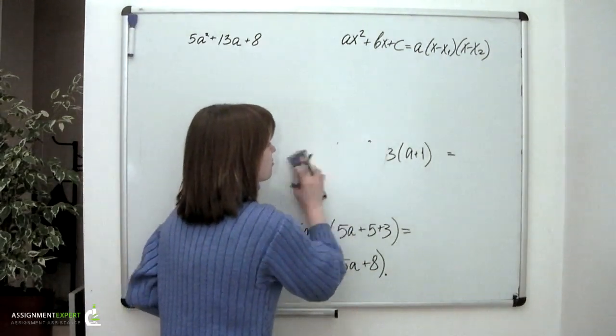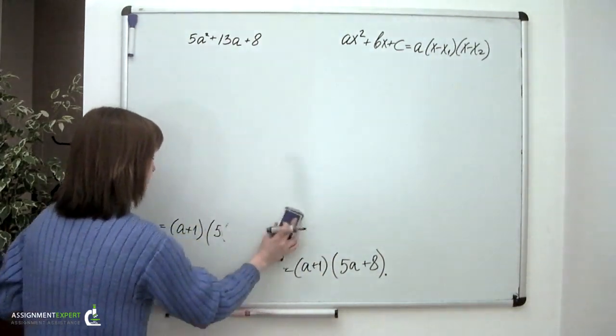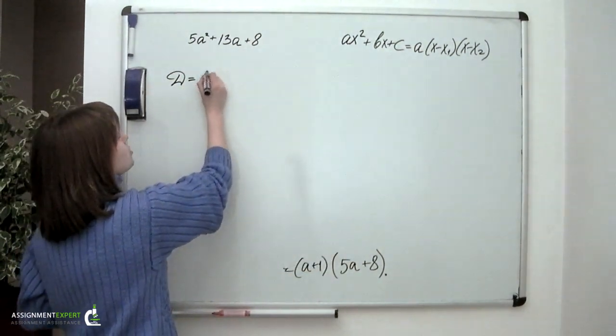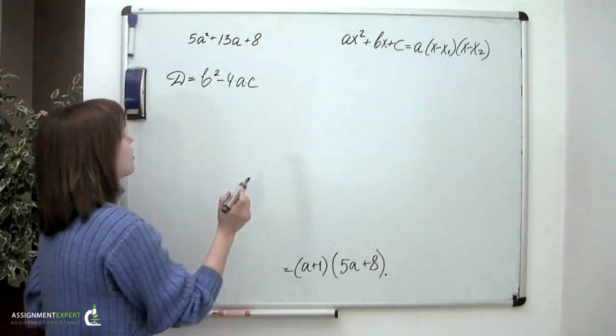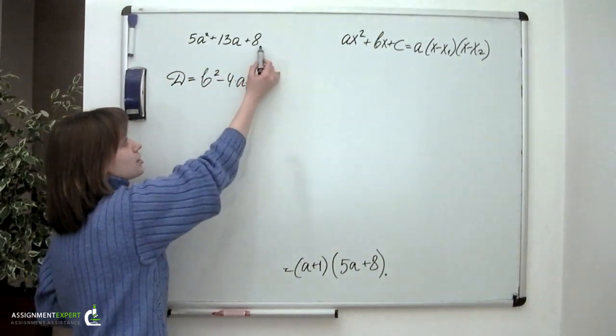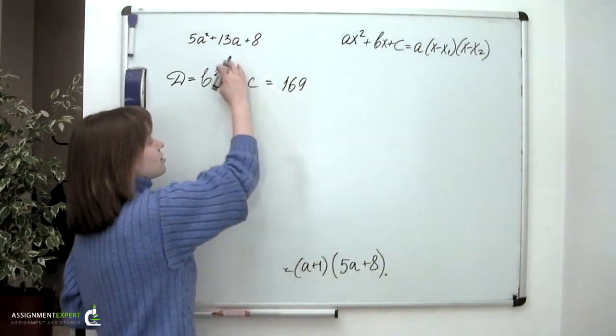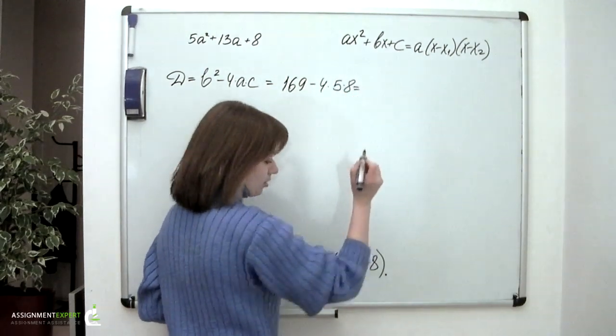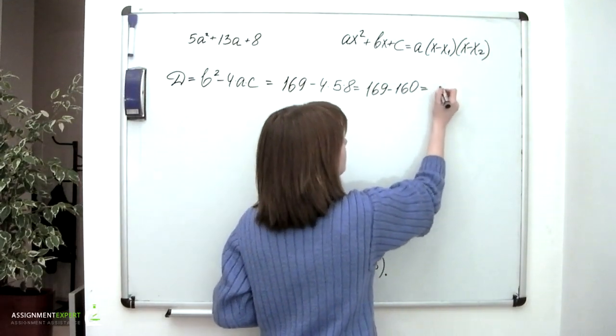So let's apply this formula to our polynomial. And the first step on this path would be finding the discriminant of the given polynomial. So the discriminant is equal to squared b minus 4 times a times c. And in application to our expression we have that b equals 13, a equals 5 and c equals 8. So we have 169 which is 13 squared minus 4 times 5 times 8. Or 169 minus 160 which is 9.